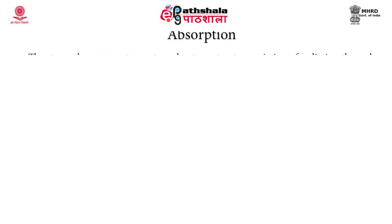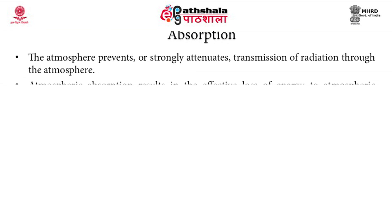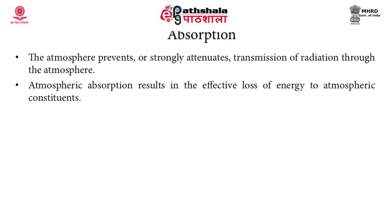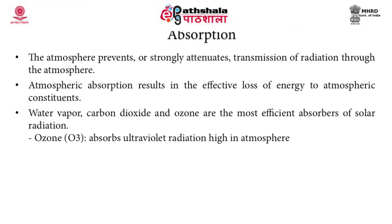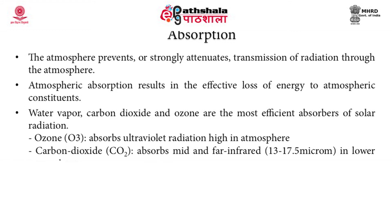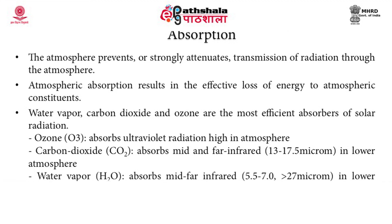The second factor causing attenuation is absorption. The atmosphere prevents or strongly attenuates transmission of radiation, resulting in effective loss of energy to atmospheric constituents. Primarily water vapor, carbon dioxide, and ozone molecules are the most efficient absorbers of solar radiation. The ozone molecule absorbs ultraviolet radiation high in the atmosphere. Carbon dioxide absorbs middle and far infrared radiations in the range of 13 to 17.5 microns in the lower atmosphere. Water vapor molecules absorb middle to far infrared radiations in the lower atmosphere, ranging from 5.5 to 7 microns and also greater than 27 microns.